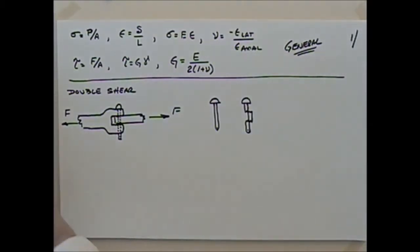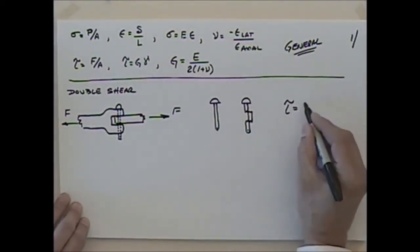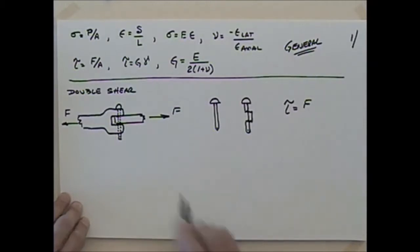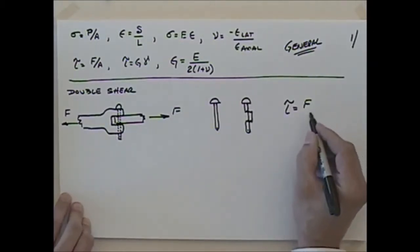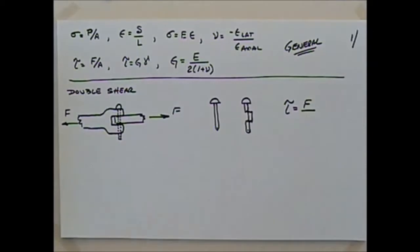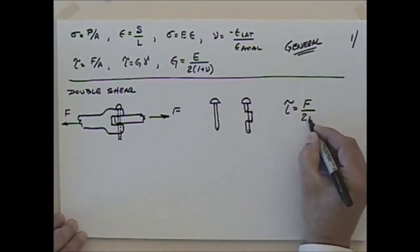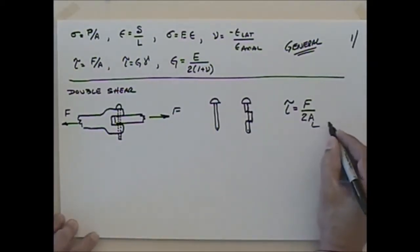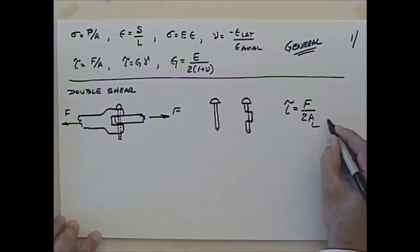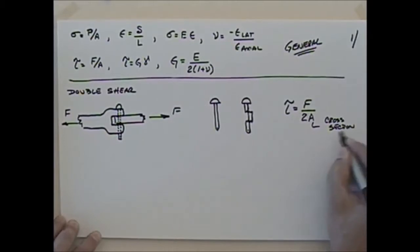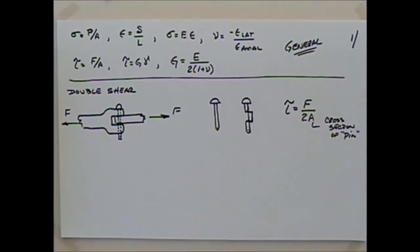If we look at how this is going to fail — looking at that pin in failure — before failure we just have a pin there. If the pin fails, the shear stress tau is equal to the force divided by two times the area, where the area is the cross-sectional area of that pin — bolt, pin, whatever you have in there. So that's double shear.